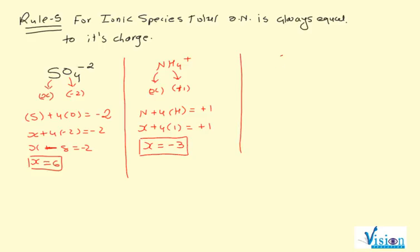If you have something like Cr³⁺, this is a single item with the charge given. So its oxidation number is plus 3, that's it. If a single item comes, this is a simple rule.